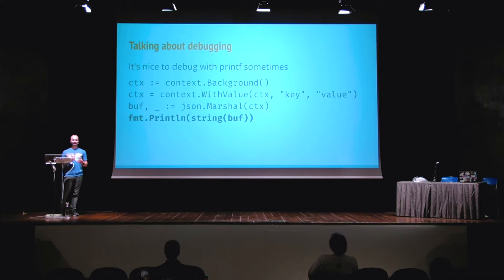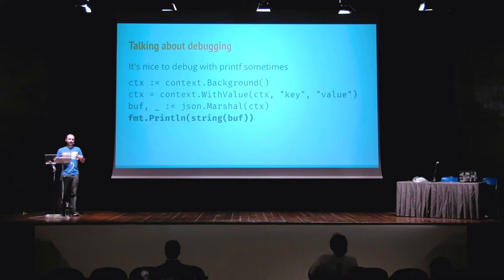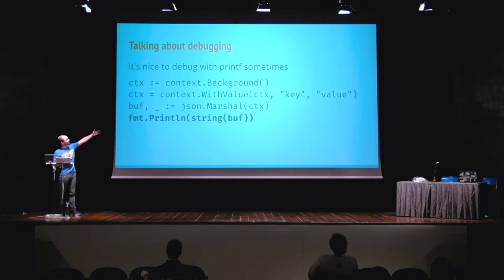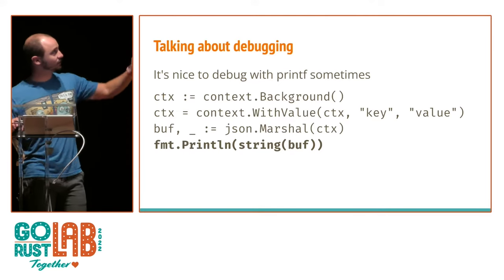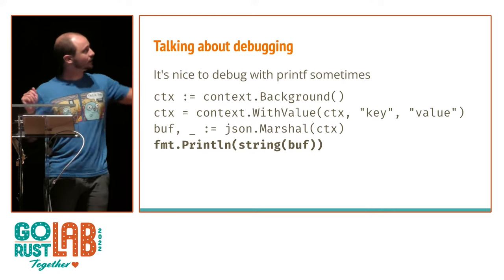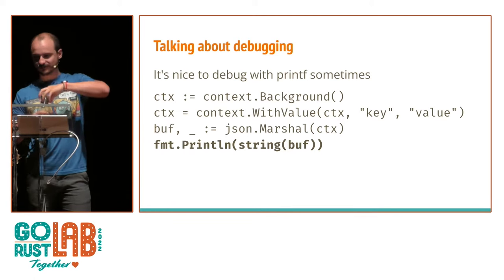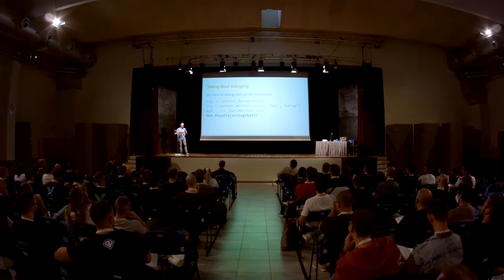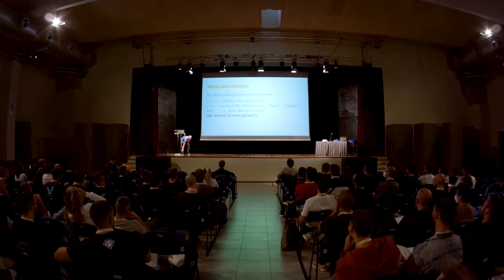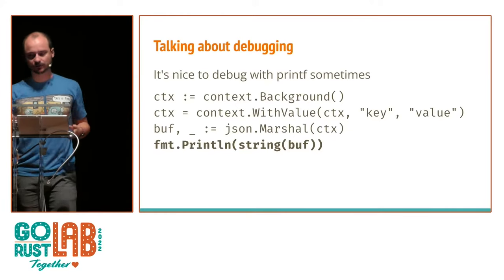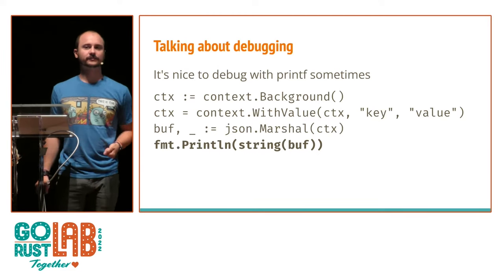Especially if you need to debug things that deal with context. I do like context in Go, but it's not maybe the best type to inspect. If you printf a context, it doesn't give you much. Sometimes you need to really look inside the context. So I thought, maybe I can just marshal it — print the context as JSON. I would like you all to take a look at this code that creates a context with one key and one value, marshals it to JSON, and figure out what this code might print.